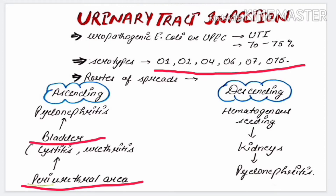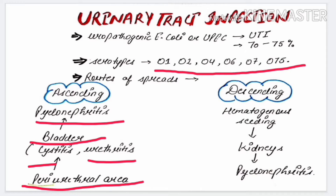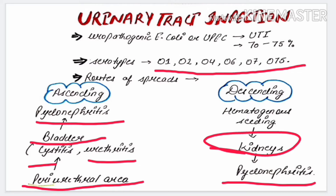At the bladder, E. coli produces inflammation, leading to cystitis and urethritis. It then ascends further to the kidney, where it again produces inflammation called pyelonephritis. In the descending route, E. coli spreads through the blood via hematogenous seeding, reaching the kidney and producing pyelonephritis.